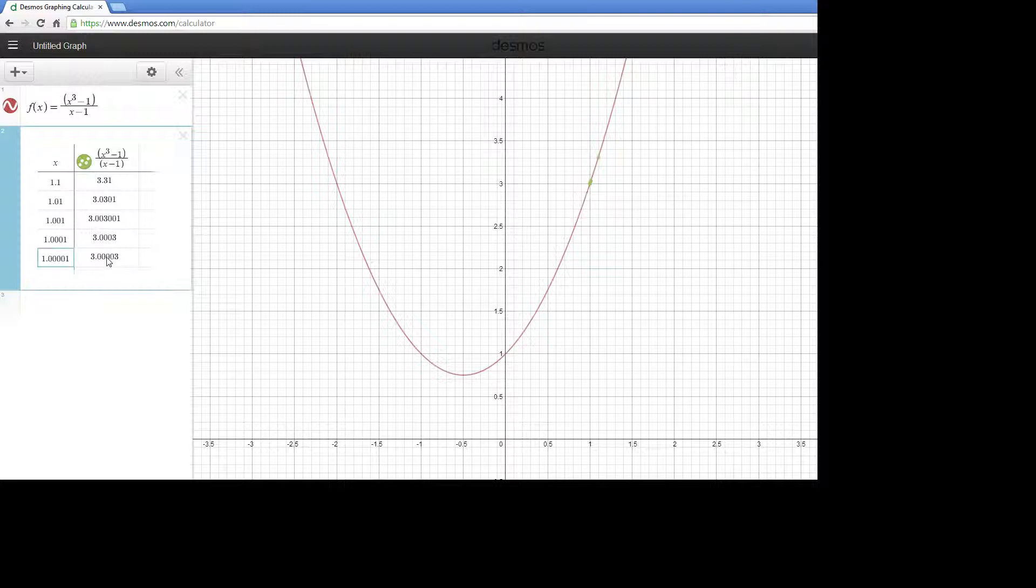So if you want to do it going to 1 from the left, you can just start off with, say, 0.9 and then make them get closer—0.99, and so on.